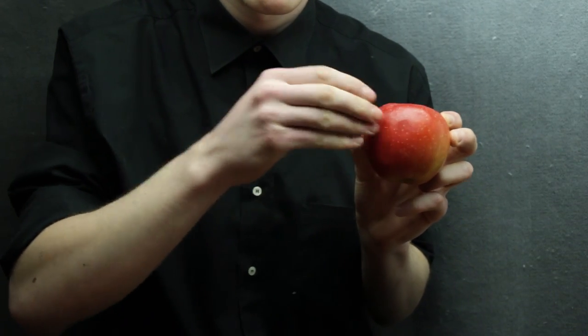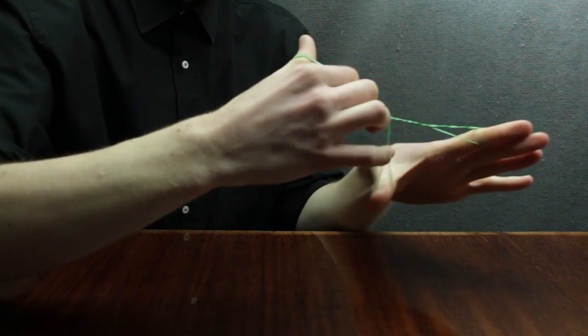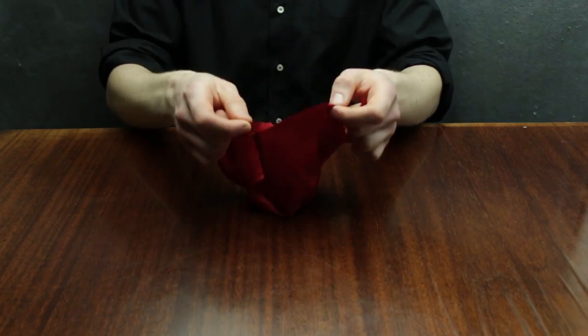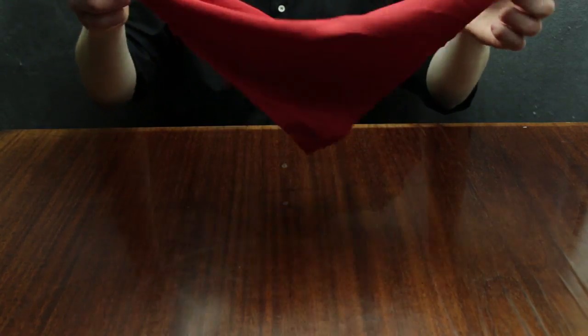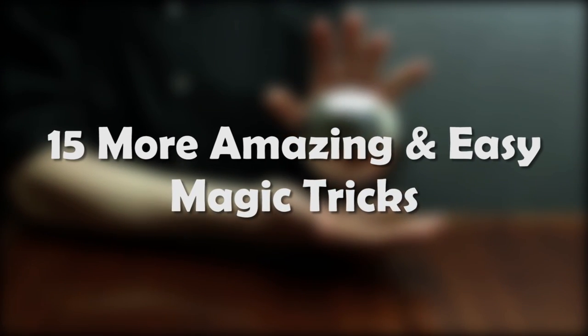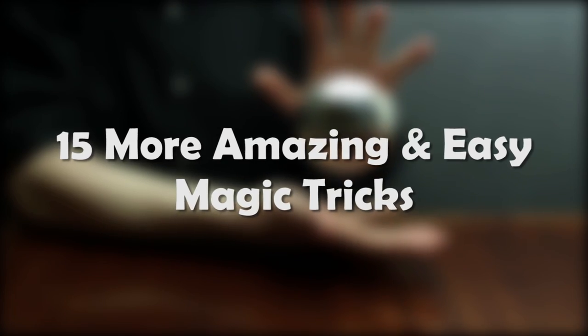There's nothing quite as satisfying as amazing your friends with an amazingly simple trick that only you know the secret behind. It's also very annoying when a magic trick is performed on you that you cannot figure out. That's why you have to keep watching, because here are 15 amazing, yet super easy magic tricks you can do with everyday objects.